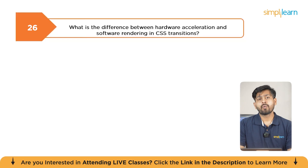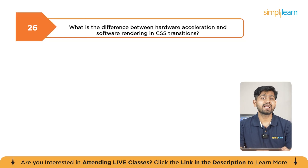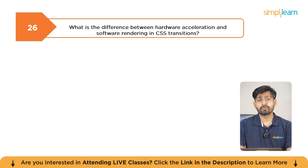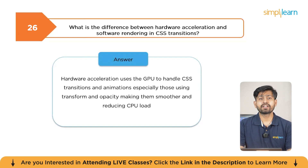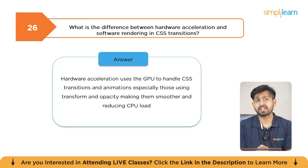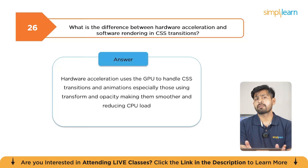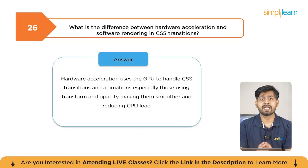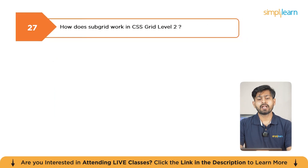What is the difference between hardware acceleration and software rendering in CSS transitions? Hardware acceleration uses the GPU to handle intensive graphical tasks, resulting in smoother animations. Software rendering uses the CPU, which can be slower and less efficient for complex animations.